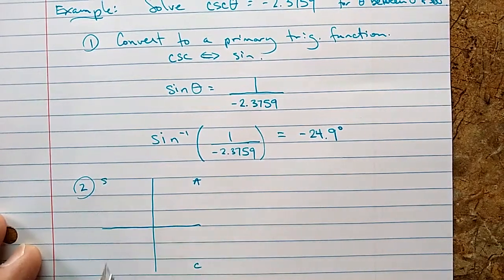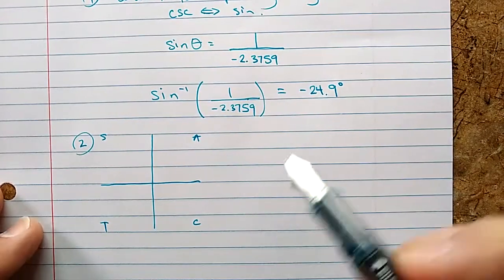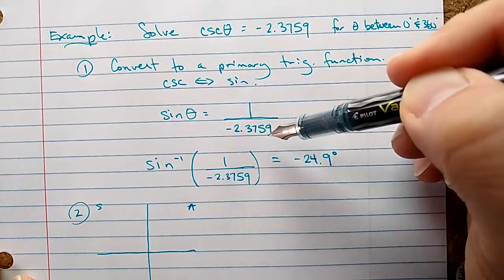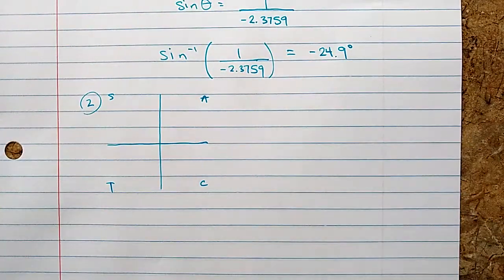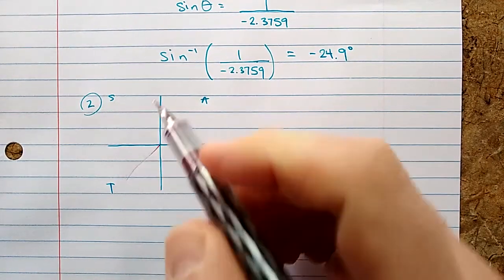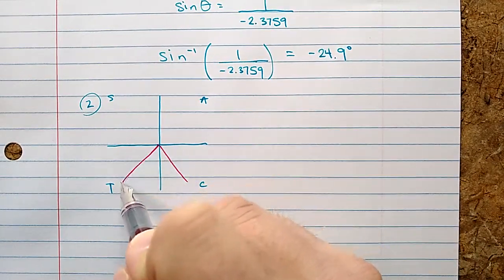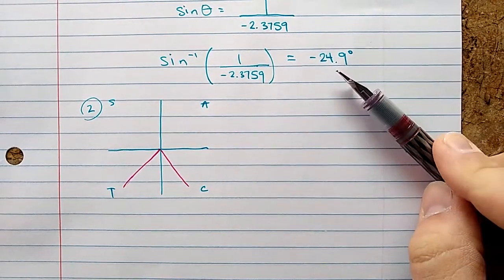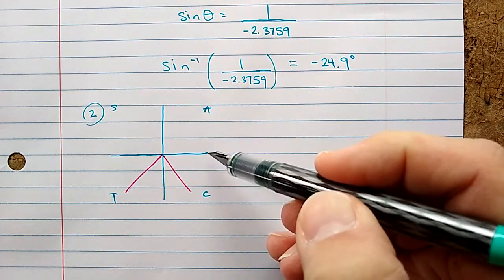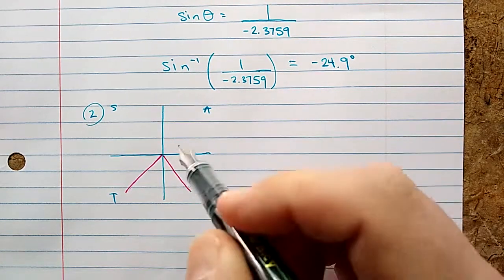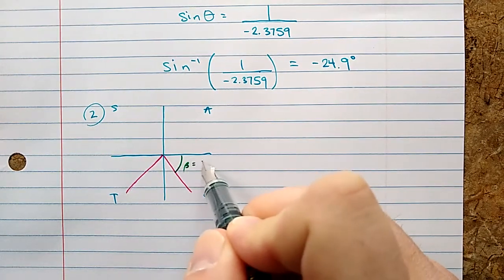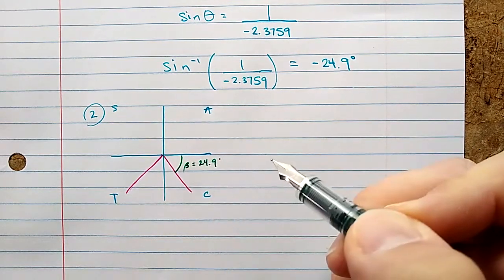Let's see, the sine of theta is a negative number. Looking at our CAST rule, sine is positive on the tops, so that means we're going to get angles down here. Negative 24.9 degrees, well that would be starting at zero and backing up, going clockwise. What this tells us is beta is 24.9 degrees, and this terminal arm is appropriate. It will give this sign, but the angles must be between zero and 360 degrees.